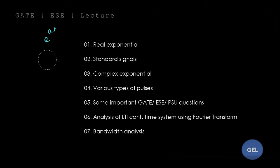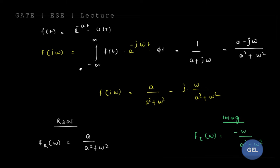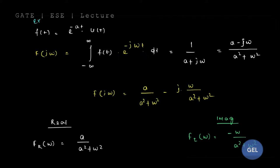Look here carefully at the real exponential signal. If you have an f(t) given as e to the power minus at times u(t), the Fourier transform of this function is found by multiplying e to the power minus jωt with f(t) and integrating. If you do so, you will get 1 by (a + jω).